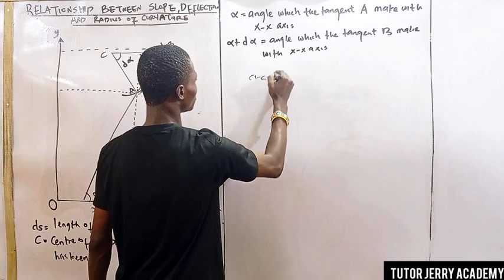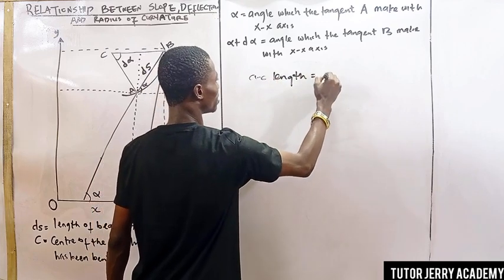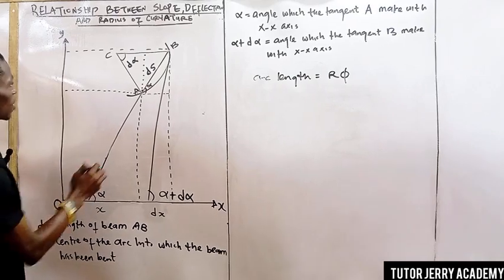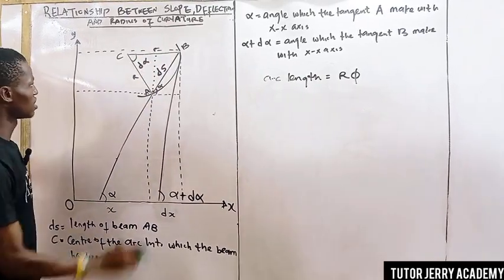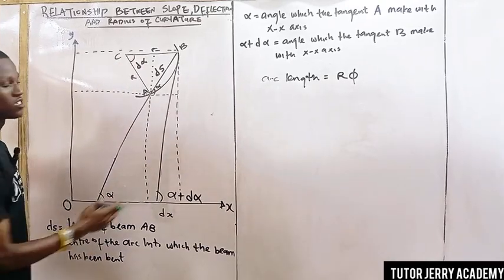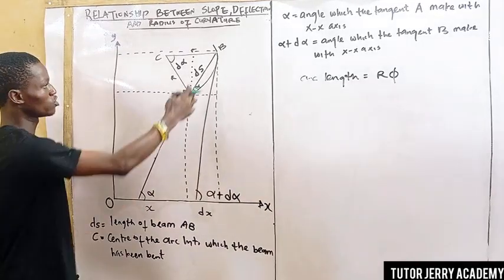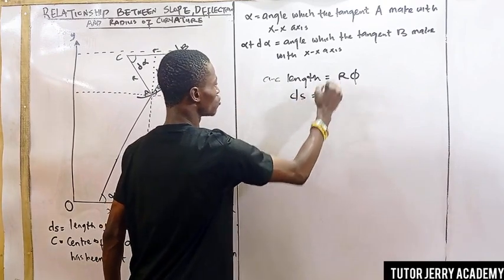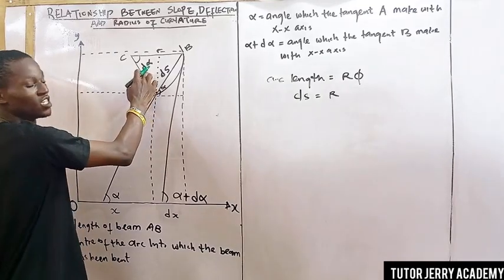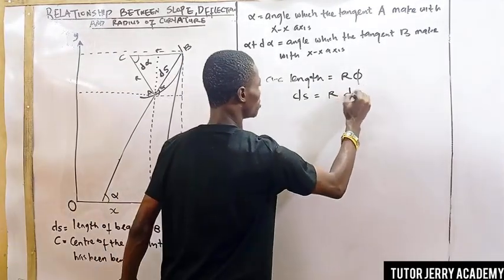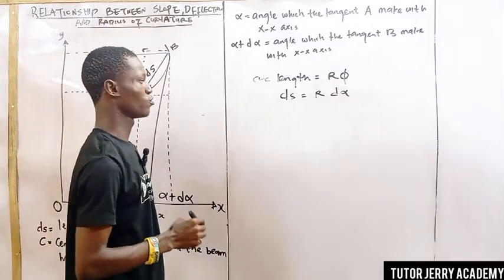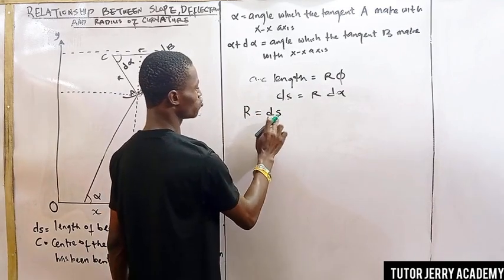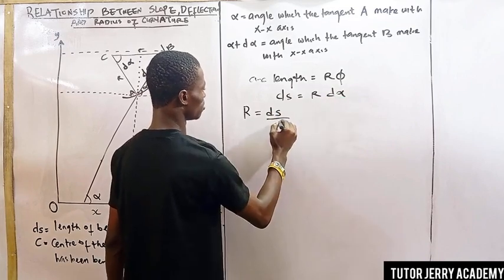From elementary geometry, you know that arc length is given by radius multiplied by the angle subtended. In this case, the radii are shown here and this is the angle subtended. Our arc length is the same as our ds. So ds equals R times alpha. If we make R the subject of the formula, we get R equals ds over alpha.